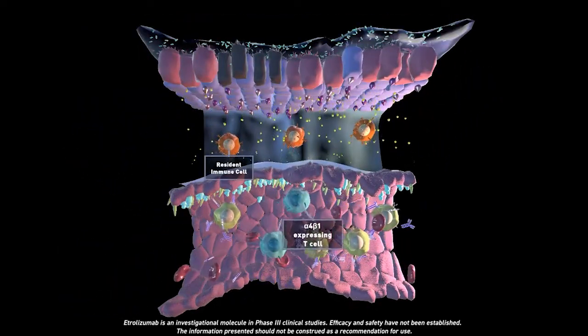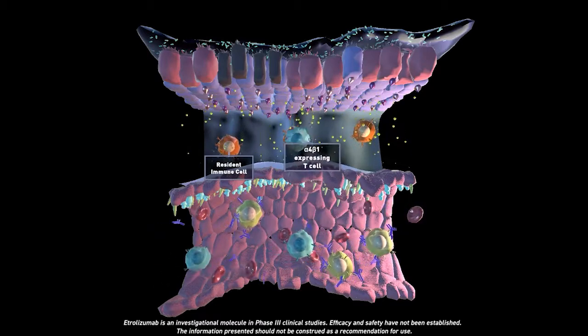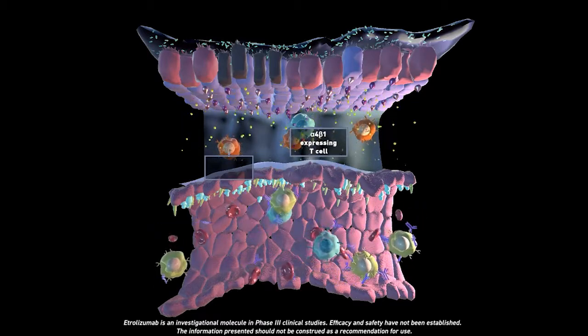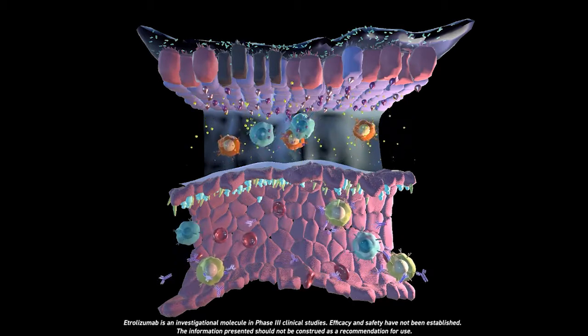Meanwhile, T cells expressing the alpha-4-beta-1 receptor travel through the blood vessel and continue to bind to VCAM1, entering the lamina propria.